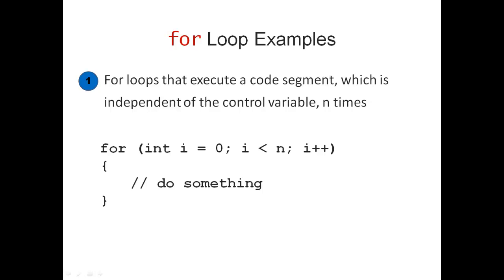So here is the pattern. We start with the keyword 'for'. We initialize our control variable i with 0. We keep repeating as long as i is less than n. And we increment i by 1. So: i gets initialized with 0, i less than n, i plus plus.